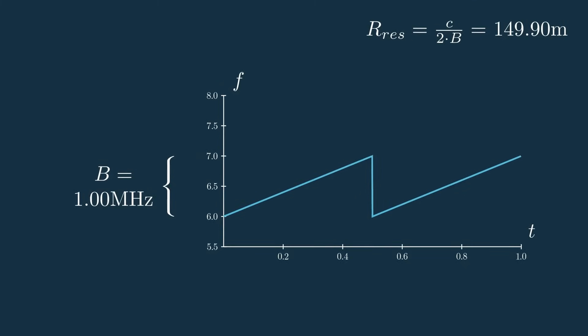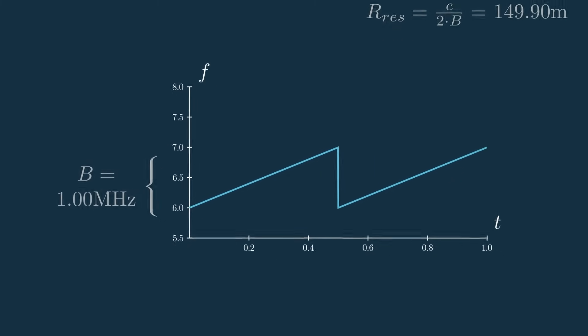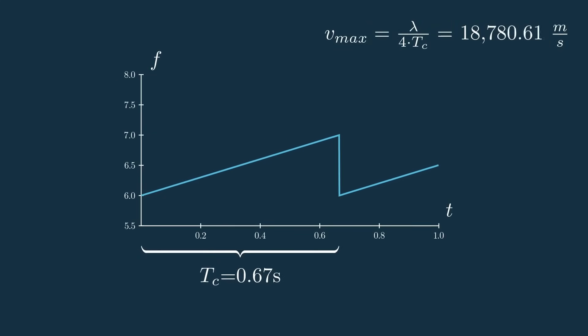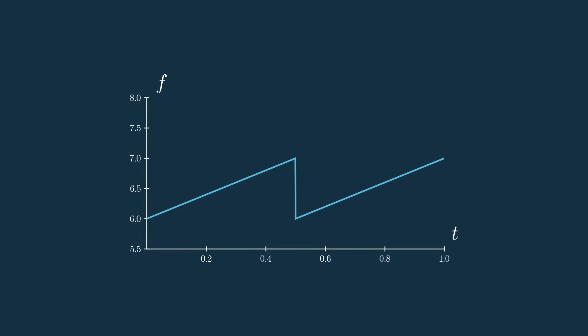which will have an impact on our range resolution, or the minimum range between targets that we can detect, and how long we want our ramp to be, which will affect the max velocity that we can detect. These are just some of the design decisions we have to make when designing an FMCW system, but there are quite a few more, so I'll cover that in a more comprehensive video.